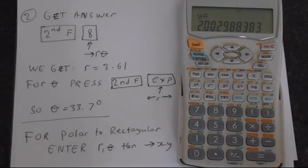So that's how you do your rectangular polar form conversions using your Sharp calculator. Hopefully this is helpful, and thank you.